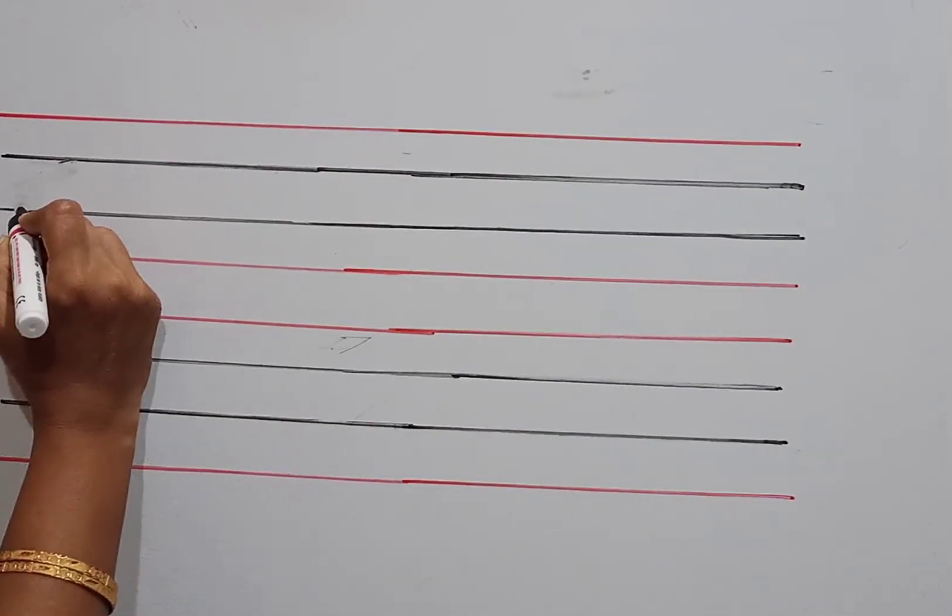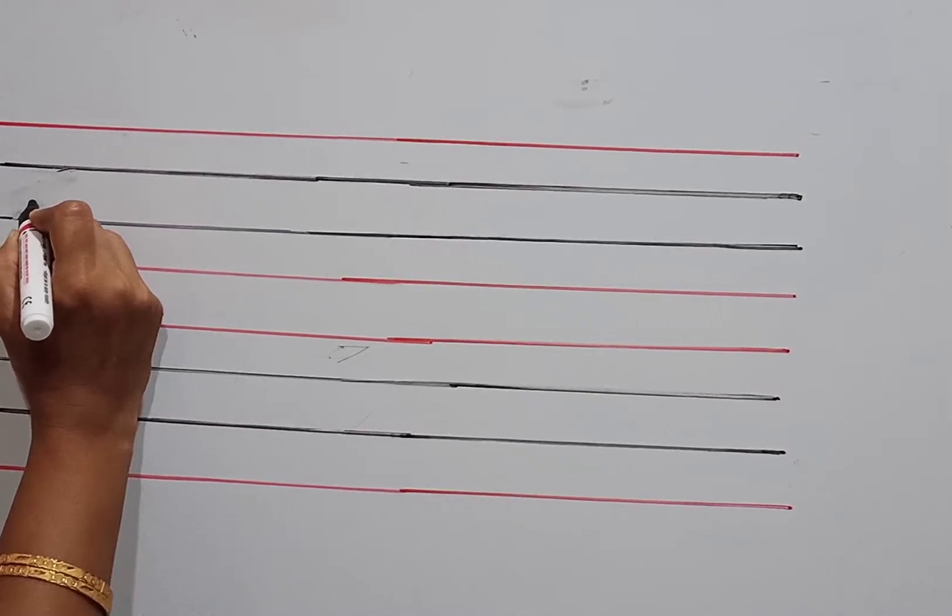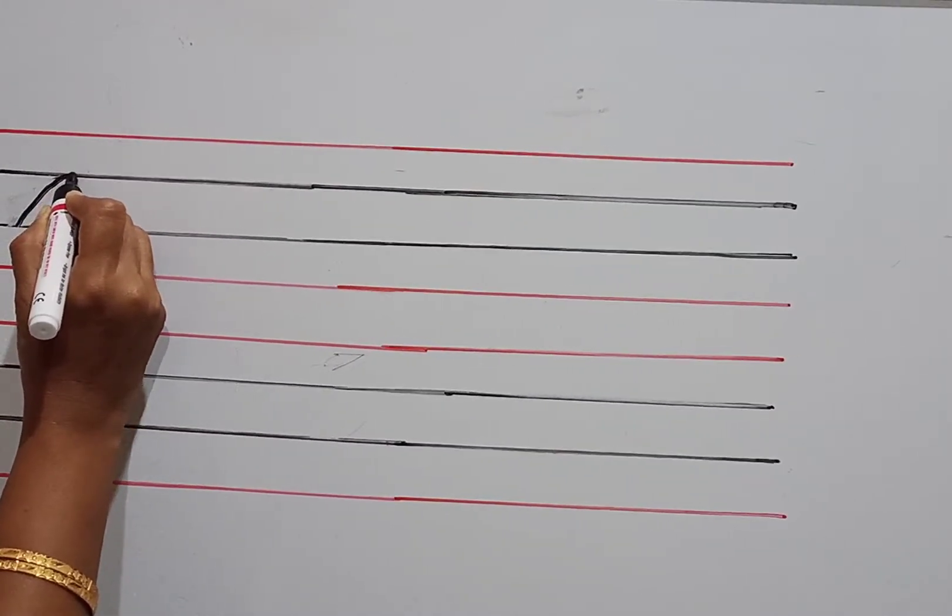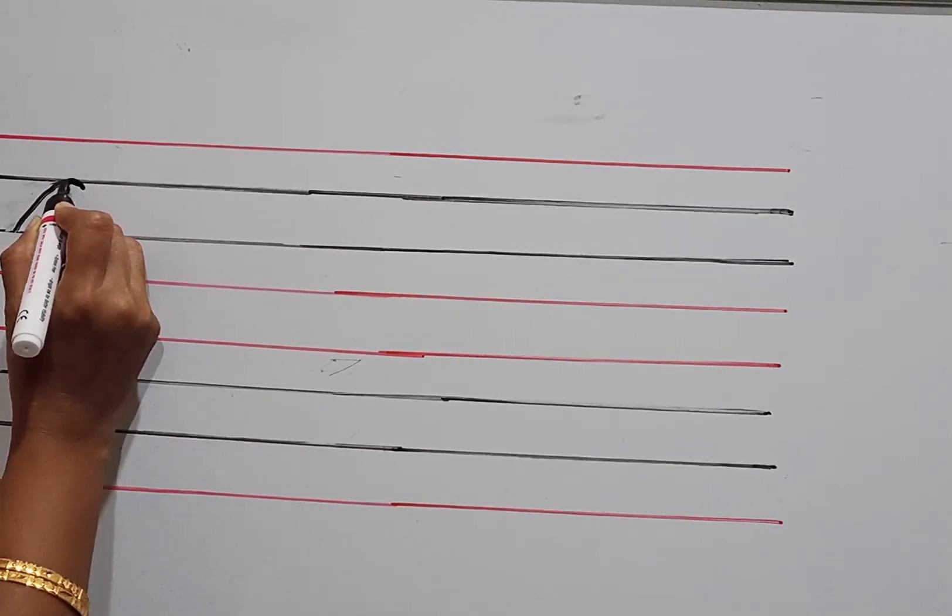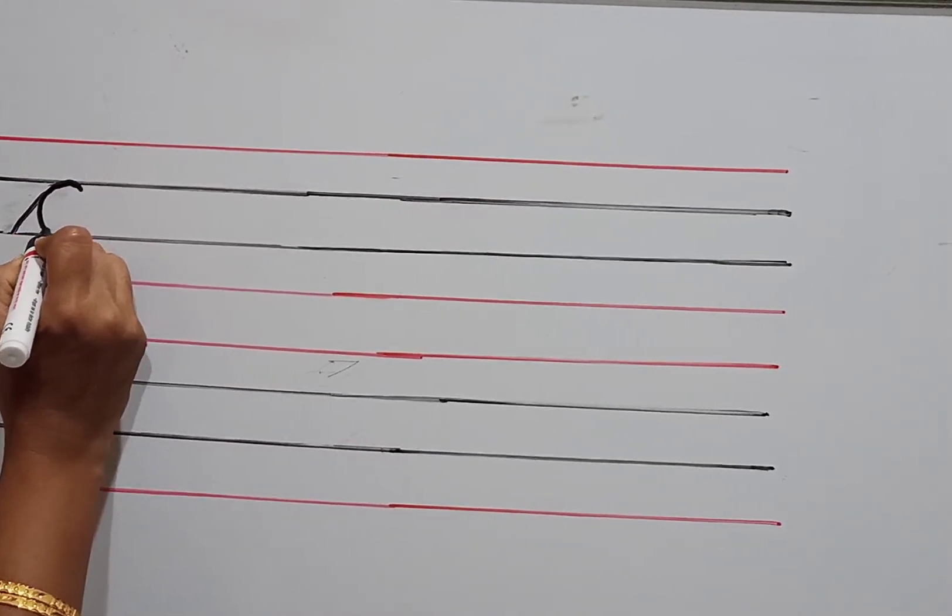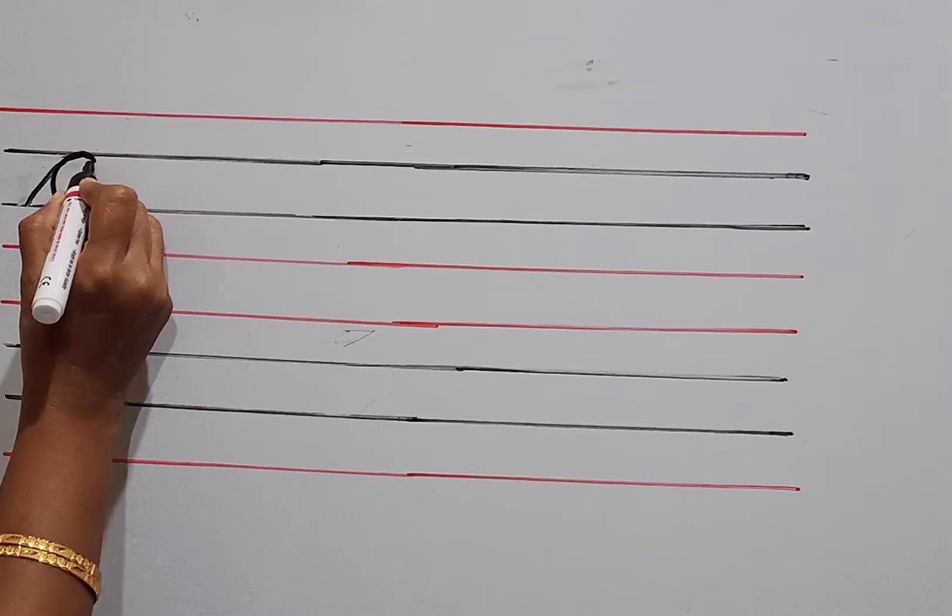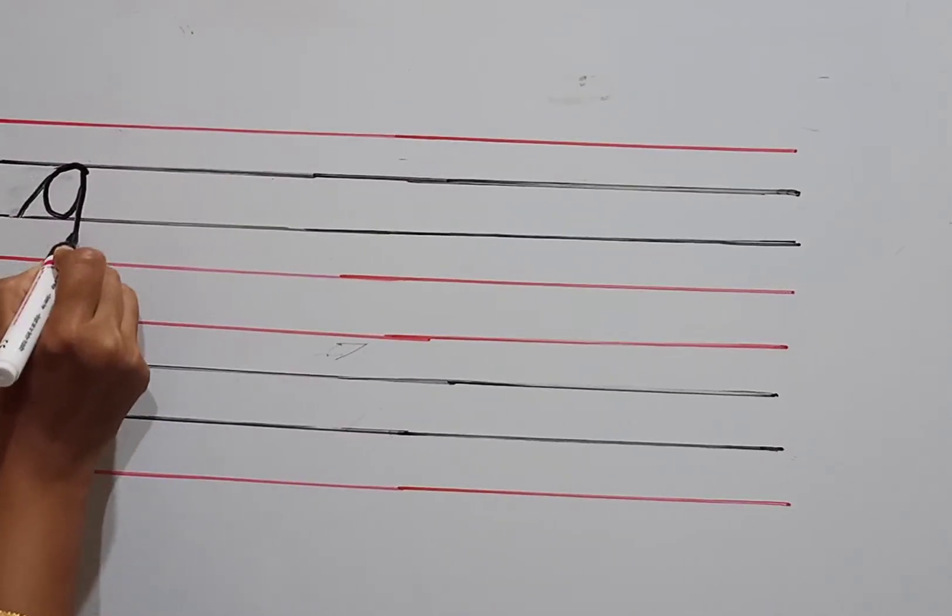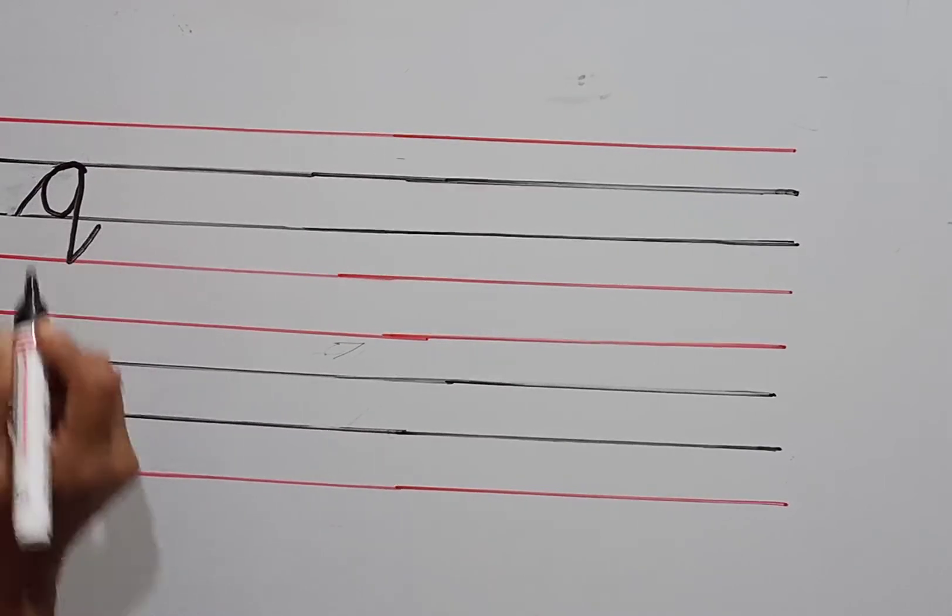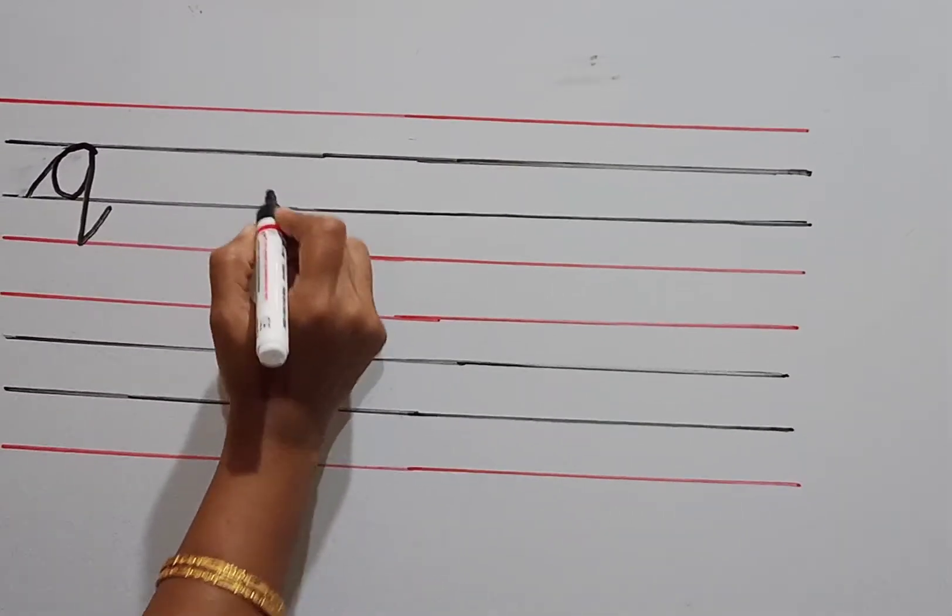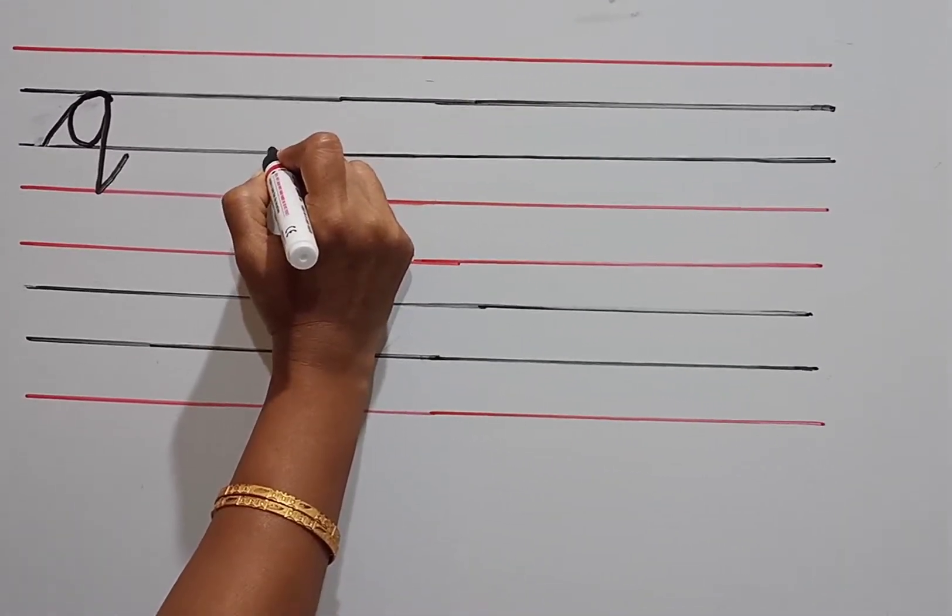So first begin again from here, down again like a how we have written, come back, then you come down and then you go up. This is your q again.